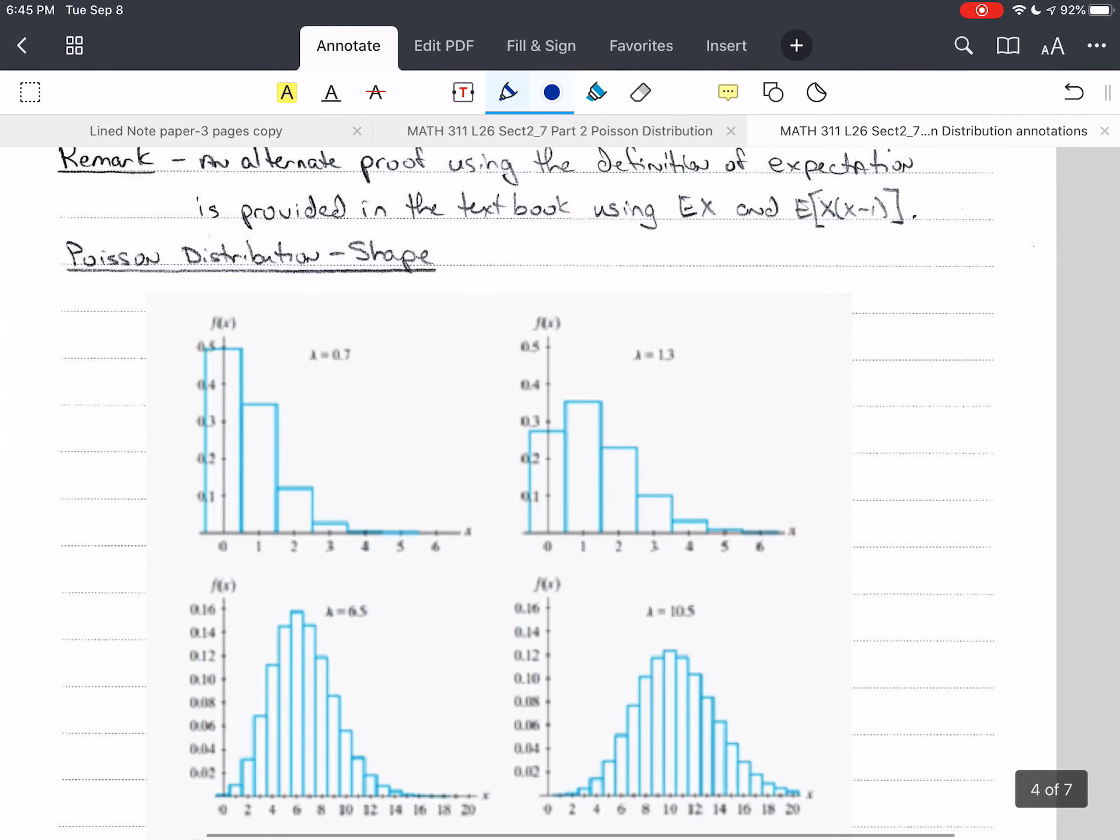So let's look at the shapes. What we'll notice is for lambda equals 0.7, we have an extremely skewed distribution, skewed to the right. When we increase lambda to 1.3, we still have a skewed distribution, but now it's not just completely skewed to the left. We do have a little bit of a peak. And we increase again to 6.5, and now we still have a skewed distribution, but it's looking a little more symmetrical. And by the time we get to 10.5, we have a fairly symmetrical distribution.